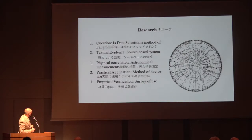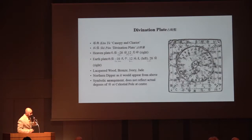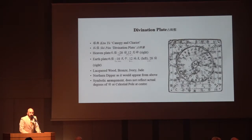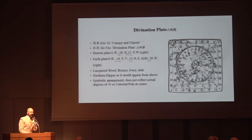We're going to look at the practical application and also some sort of imperial verification — a survey of use. This is called a Shri Pan. This was the popular date selection method at the time that Guo Pu wrote the Deng Shri Pan in the Jin dynasty — just the other side of the Han dynasty. So in the strict sense it's not quite a classic, but it's the closest we've got — written immediately after the classical period. During that time, the Shri Pan was the popular method for date selection.